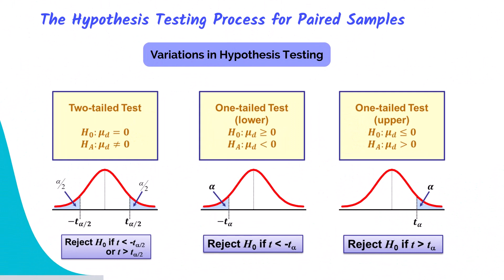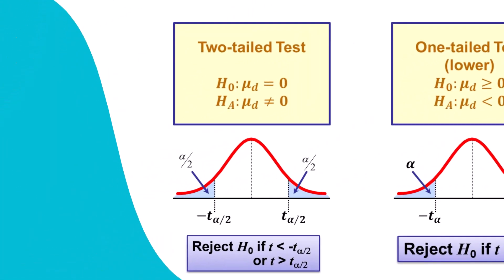Like we talked about in the prior video for independent samples, we will be working with two-tailed tests, one-tailed lower tests, and one-tailed upper tests. Here is the two-tailed test. The mu symbol with the little d represents the mean difference in the paired samples. The way the hypotheses are written here is that the population mean of the differences is equal to zero or is not equal to zero. So you might be thinking how is this different for independent samples where we hypothesize that there was no difference in the population means.